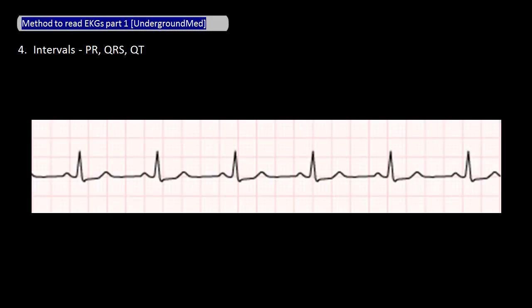After determining the axis, the next thing I look at is the PR interval using the rhythm strip. The PR interval should be less than five small boxes, or one big box. Eyeballing it, you can see that distance is slightly less than one large box, so the PR interval is not prolonged.